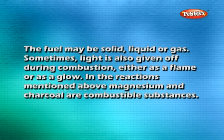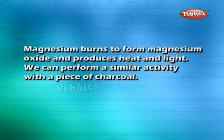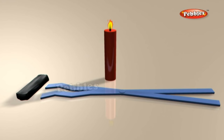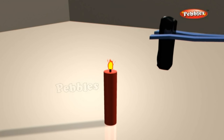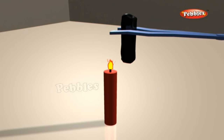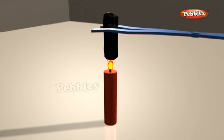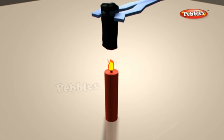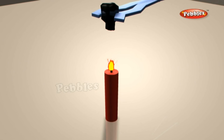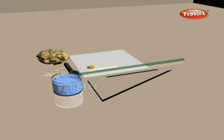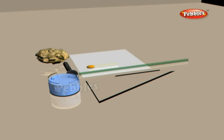Magnesium and charcoal are combustible substances. Magnesium burns to form magnesium oxide and produces heat and light. We can perform a similar activity with a piece of charcoal: hold the piece with a pair of tongs and bring it near the flame of a candle or a Bunsen burner. We find that charcoal burns in air, and coal too burns in air producing carbon dioxide, heat, and light.